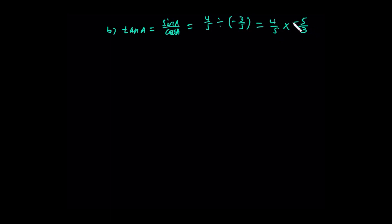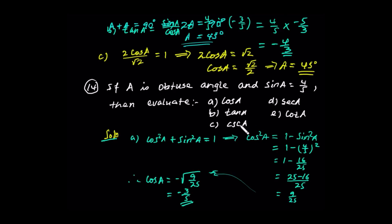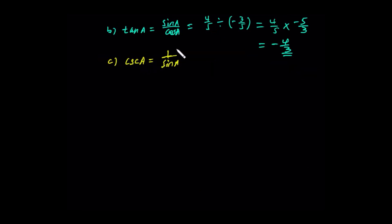We have tan A equal to negative 4 over 3. Now for cosecant of A: cosecant is the reciprocal of sine, that is 1 over sine. So csc A equals 1 divided by 4 over 5, which equals 5 over 4.